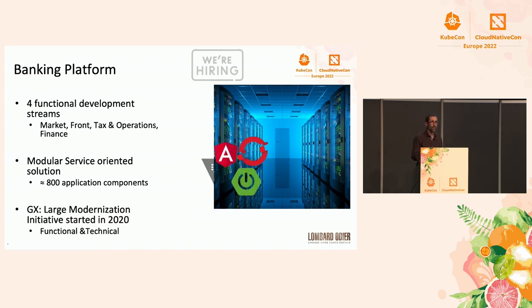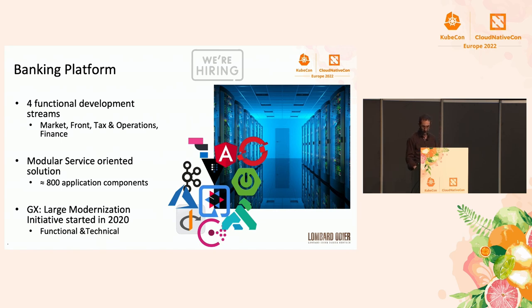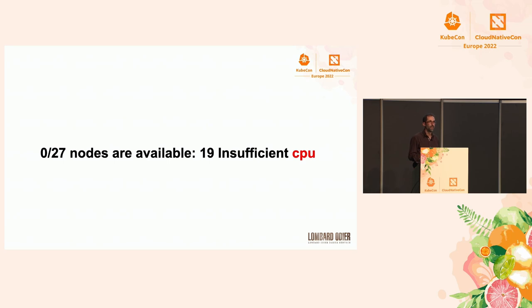In 2020, we started a large modernization initiative called GAX, where we are looking at both the functional and technical sides. We started introducing new technology, with OpenShift being one of the first. The story starts about a year and a half ago, when we were starting to ramp up our workload on our Kubernetes cluster.